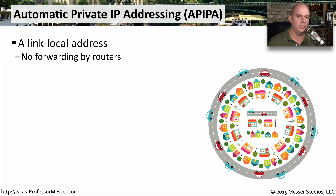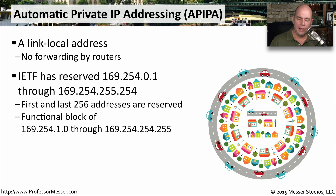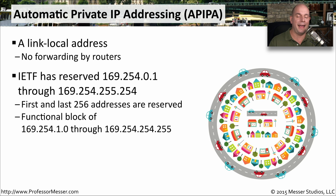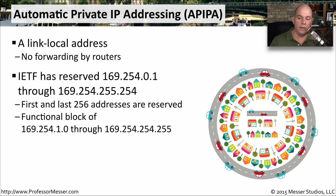There is a range of addresses you will be given as an APIPA address. The IETF has reserved 169.254.0.1 through 169.254.255.254. Within that address range, the first block and the last block of 256 addresses have been set aside as reserved. That means if you do receive an APIPA address, it will be somewhere between 169.254.1.0 through 169.254.254.255.